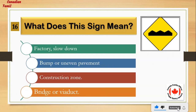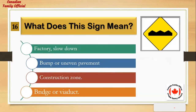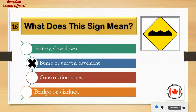What does this sign mean? Number 1: factory, slow down. Number 2: bump or uneven pavement. Number 3: construction zone. Number 4: bridge or viaduct. And the answer is: bump or uneven pavement.